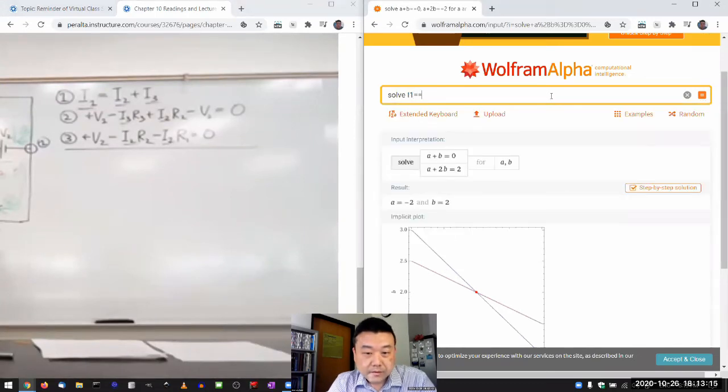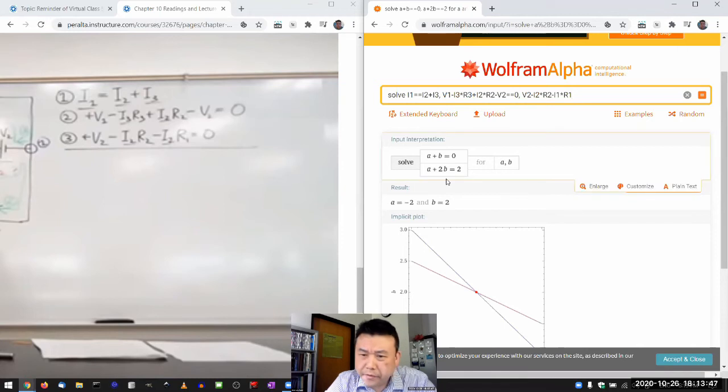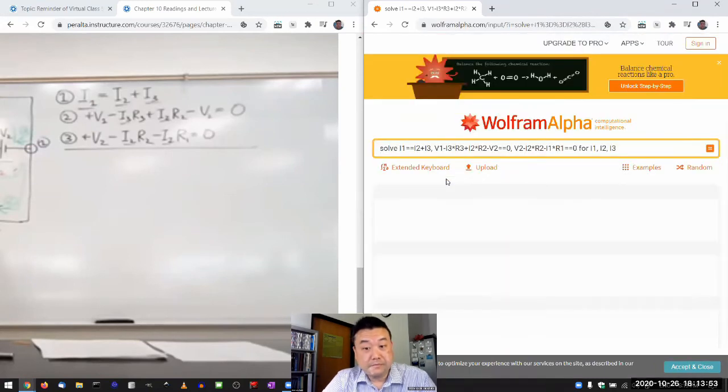So if I1 is equal to I2 plus I3, V1 minus I3 times R3 plus I2 times R2 minus V2. By the way, I'm deliberately not doing the subscripts because they tend to get messy. So my naming convention usually is to turn subscripts into number following the letter, like a programming variable. I1 times R1 equal to 0 for I1, I2, I3. Let me see if it does that. It might, it might not.